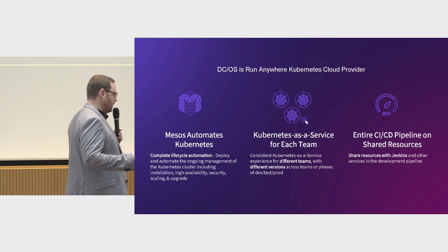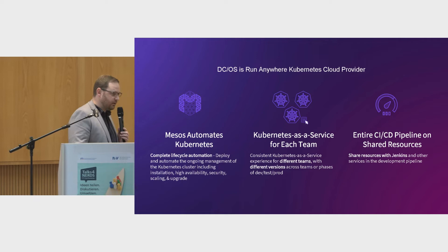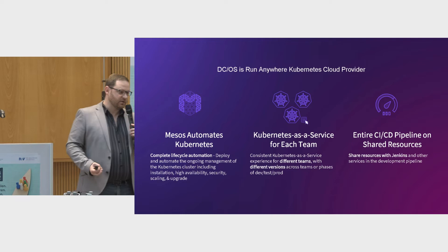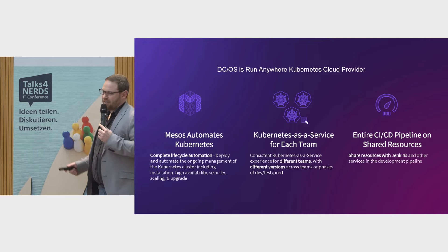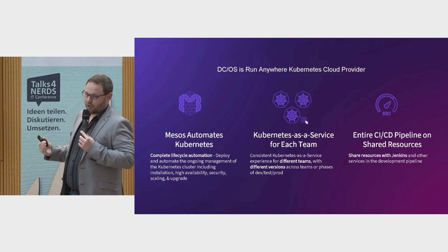In terms of DCOS and Kubernetes, we automate Kubernetes in a very intelligent way, providing access to the entire lifecycle management — deployment, configuration, sizing and resizing, rolling upgrades to the latest version, single-click upgrades, and automating spin-down. We also allow you to run Kubernetes as a service for individual teams — not just different versions, but multiple instances of Kubernetes on the same infrastructure.